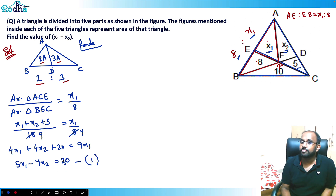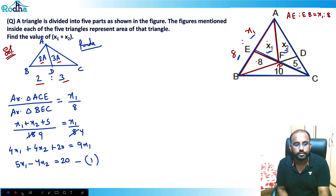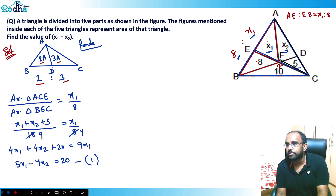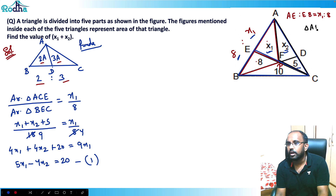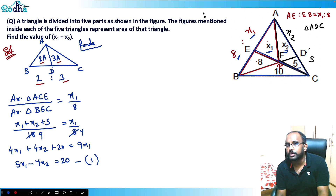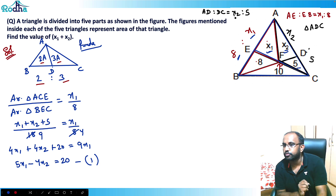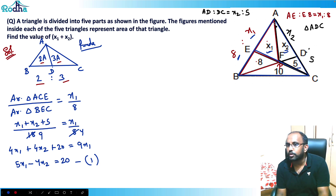Now I apply the same concept on the other side. Looking at triangle ADC: FD is the cevian, the area ratio is x2 to 5, so the side ratio AF to DC is also x2 to 5. Therefore AD to DC equals x2 to 5.